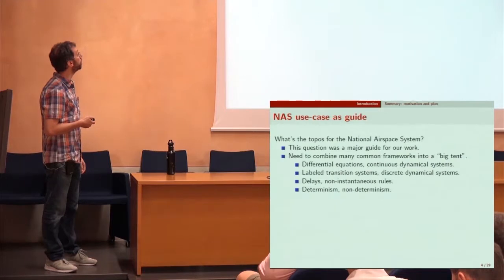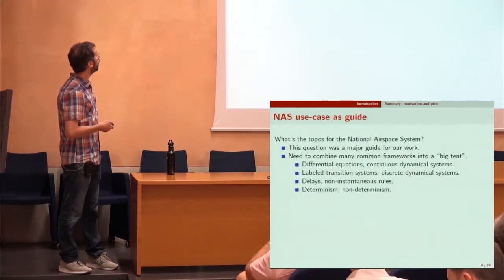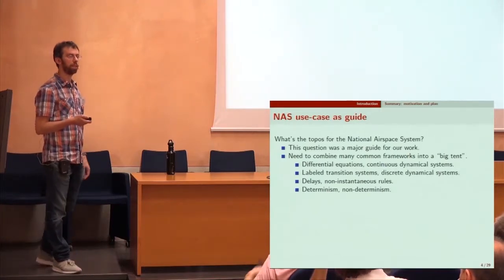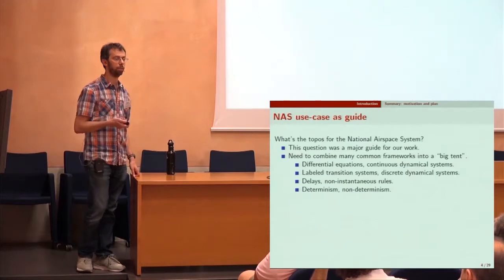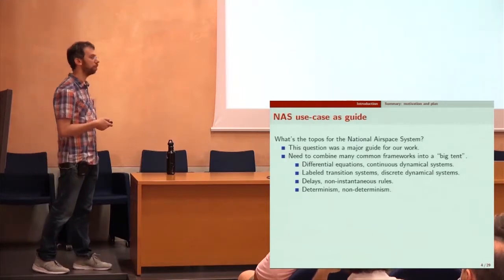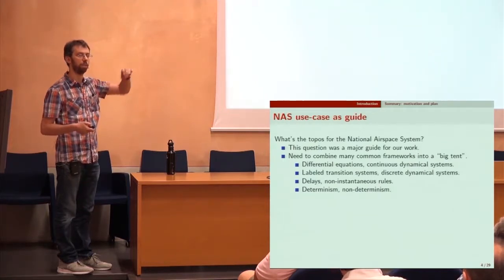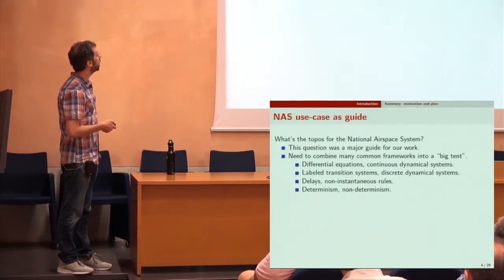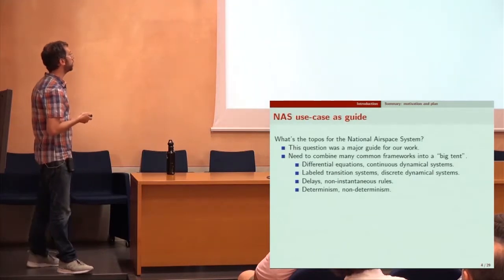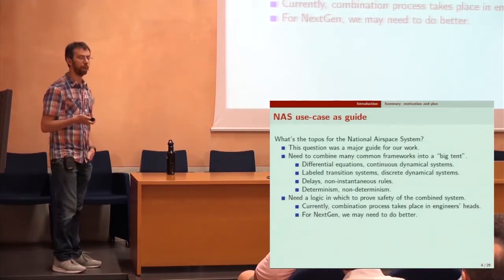The question is: what's the topos we need for the national airspace system? The only requirement is that I need to be able to understand differential equations, differential inclusions, continuous dynamical systems, labeled transition systems — moving around on a graph based on commands like 'move up' or 'move down' that can come at any moment in time — delays, non-determinism, determinism. We need a logic for this. Currently the combination process takes place in engineers' heads, but we need to do better for NextGen.